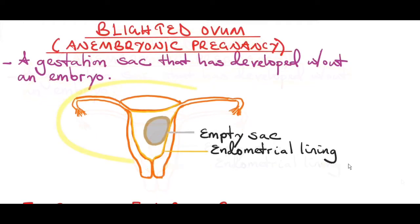As you can see in the diagram here, this is the uterus. Inside the uterus you have an empty gestational sac. In normal circumstances there should be a developing embryo in here, but in this situation there is no embryo.